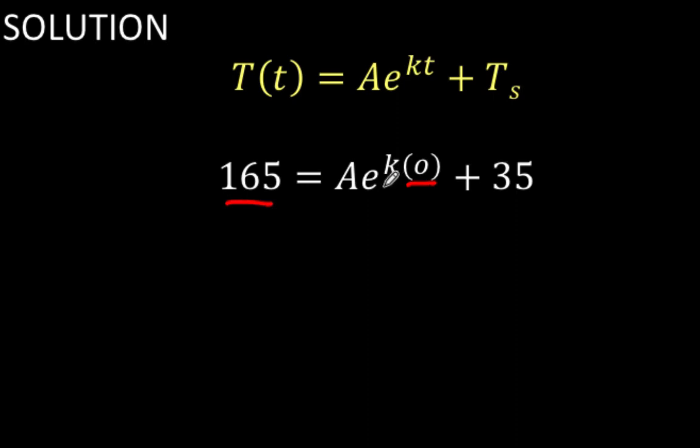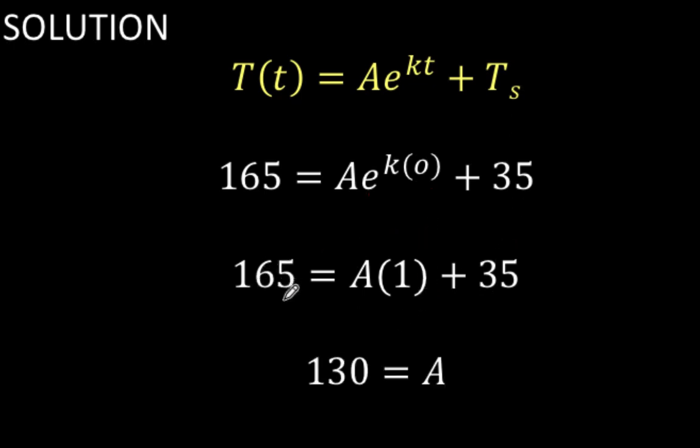And any number raised to zero equals one, so we now have this part equal to one. Then we subtract 35 from both sides. We have the value now of A equals 130. This 130 will now be substituted to our equation, so we now have this equation.